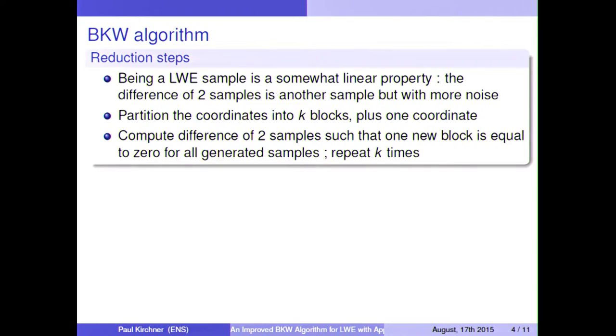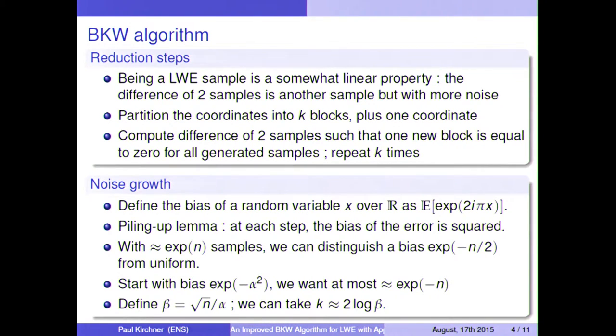The first BKW algorithm, I will start by recalling it. First, being a LWE sample is a somewhat linear property. The difference of two samples is another sample, but we are adding more noise each time we do that. So what we do is we partition the coordinates into k blocks and one coordinate that we want to discover with high probability. Each time we will compute the difference of two samples such that one new block of coordinates will be equal to zero for all generated samples. And if we repeat these k times, then there is only one coordinate of the secret. And if the noise is not too large, then we can discover it.